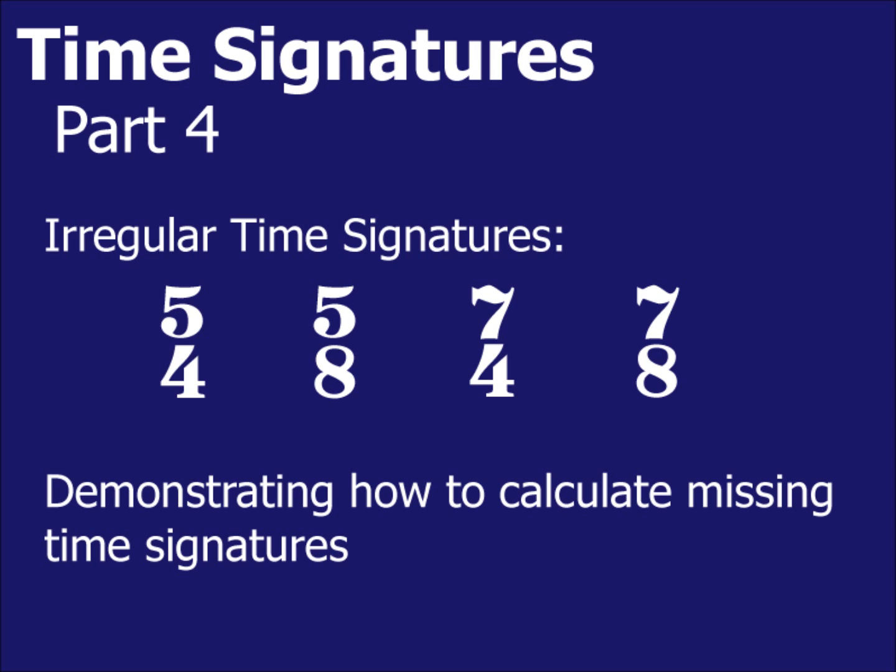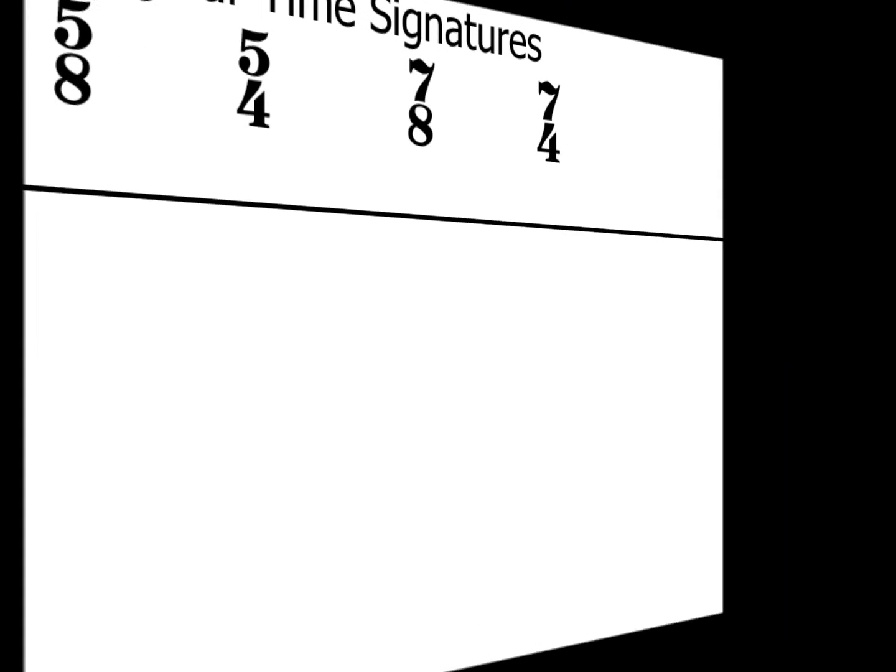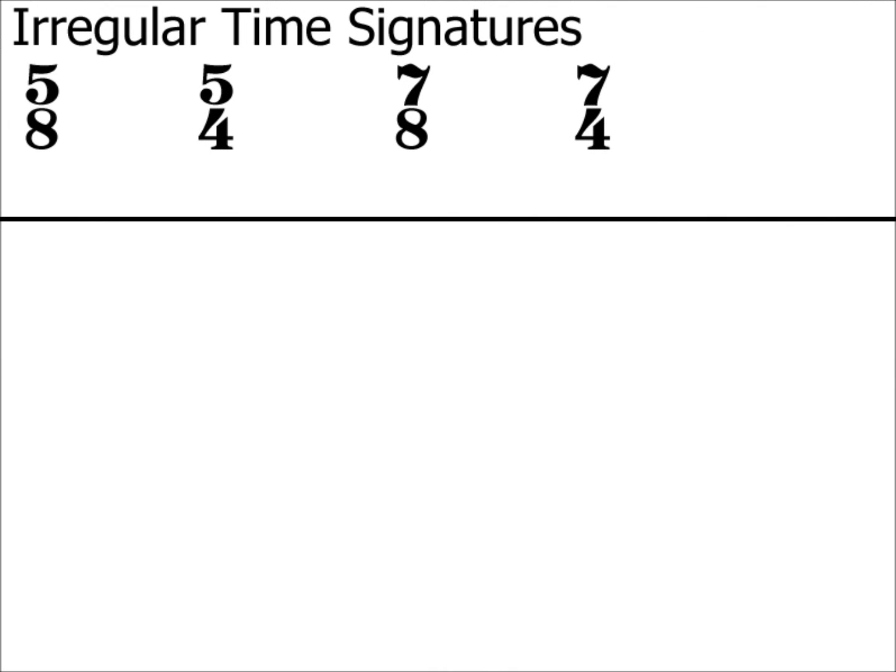In part 2, I discussed how to calculate whether a time signature was simple or compound, and whether it was duple, triple or quadruple. It's not quite that straightforward with irregular time signatures.